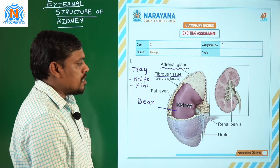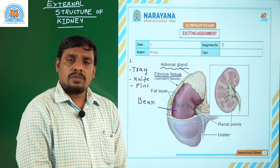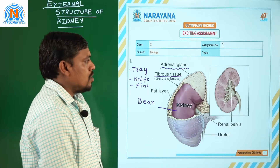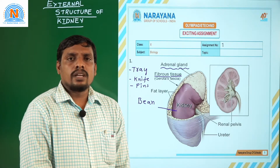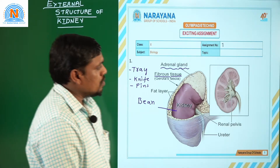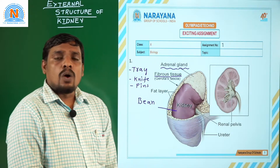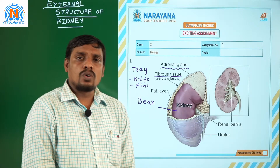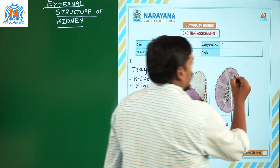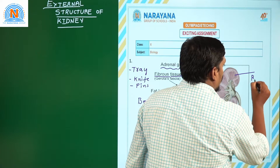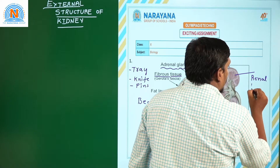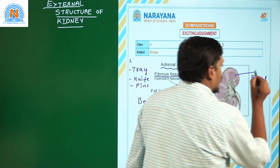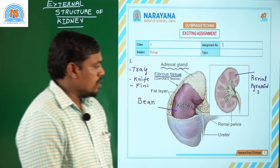Kidneys are bean-shaped structures. While cutting the kidney in longitudinal position, two different layers are visible: an outer layer called the cortex and an inner layer called the medulla. In the inner layer, you can see pyramid-shaped structures called renal pyramids. Detailed structure of the longitudinal section of human kidney will be discussed in further classes.